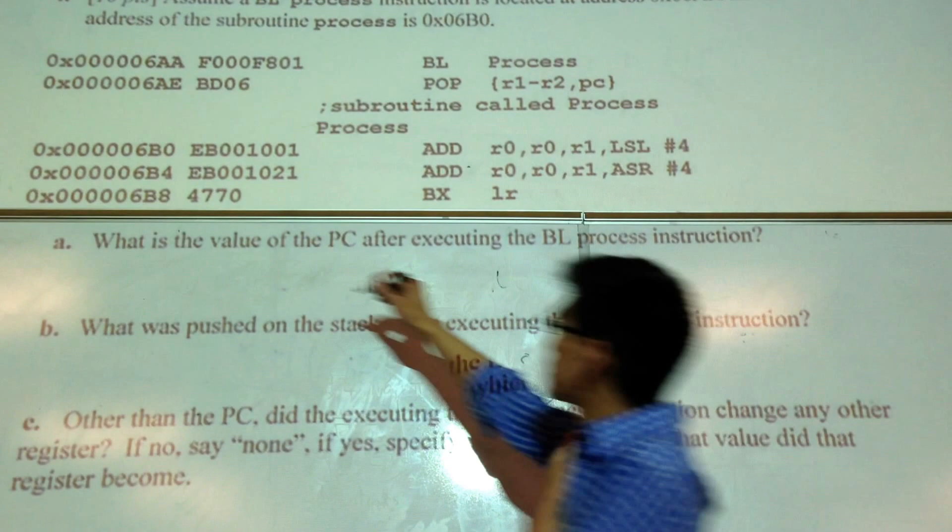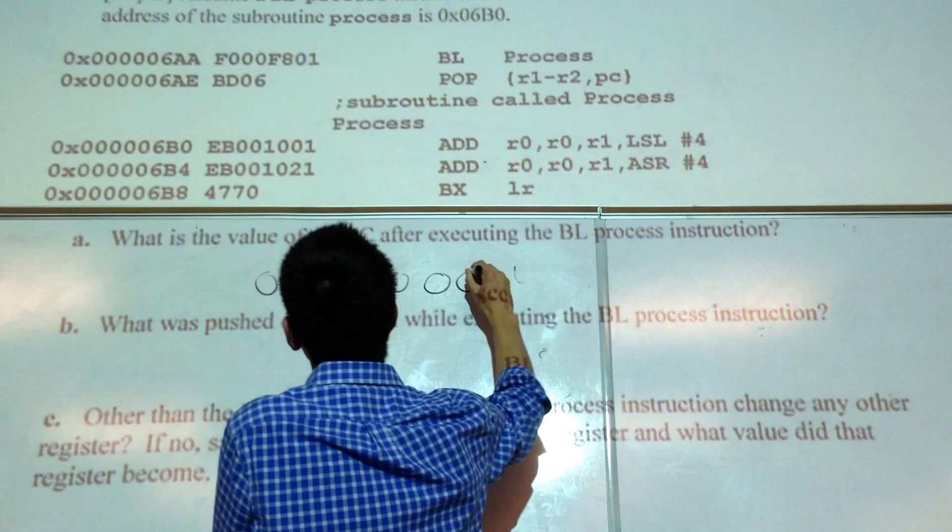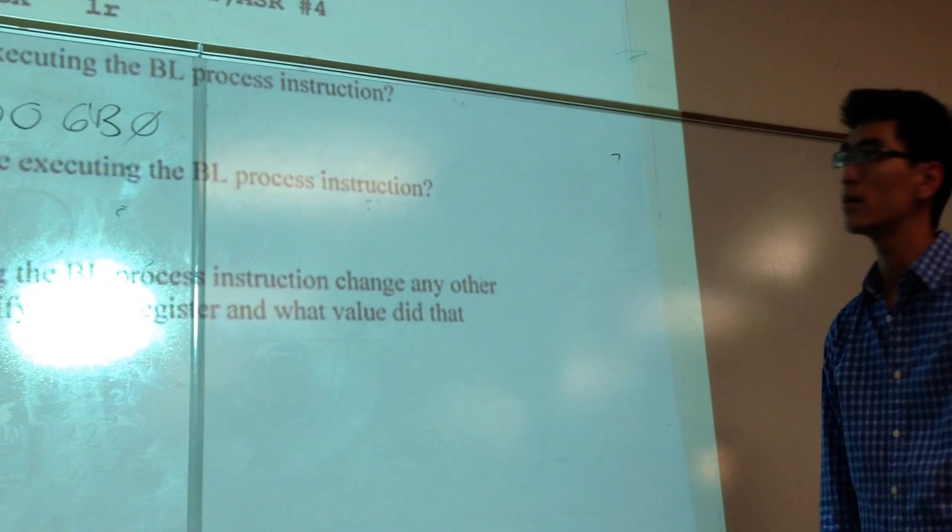So the address of the PC is going to be 0, 0, 0, 4, 5, 6, B0. Okay? Does that make sense?